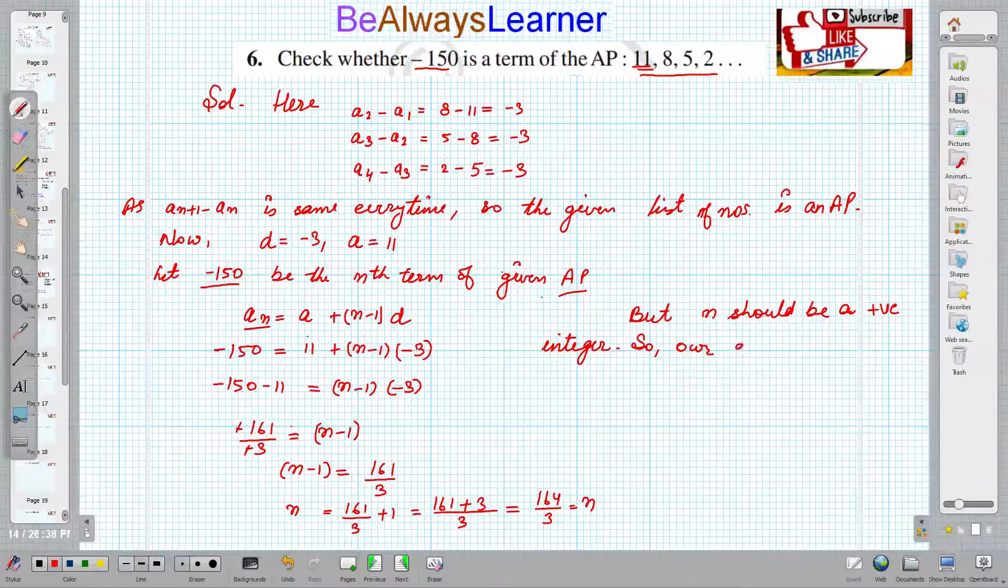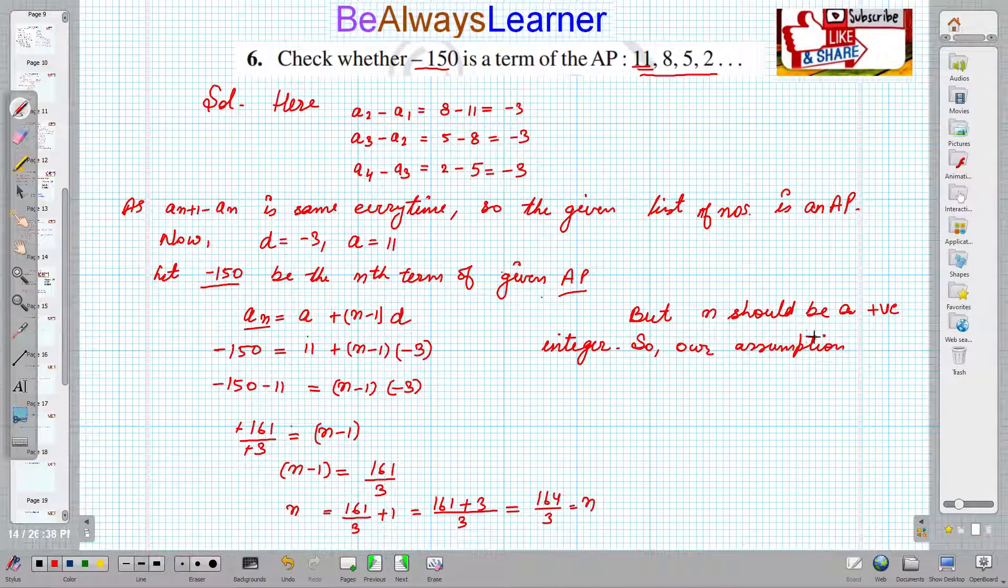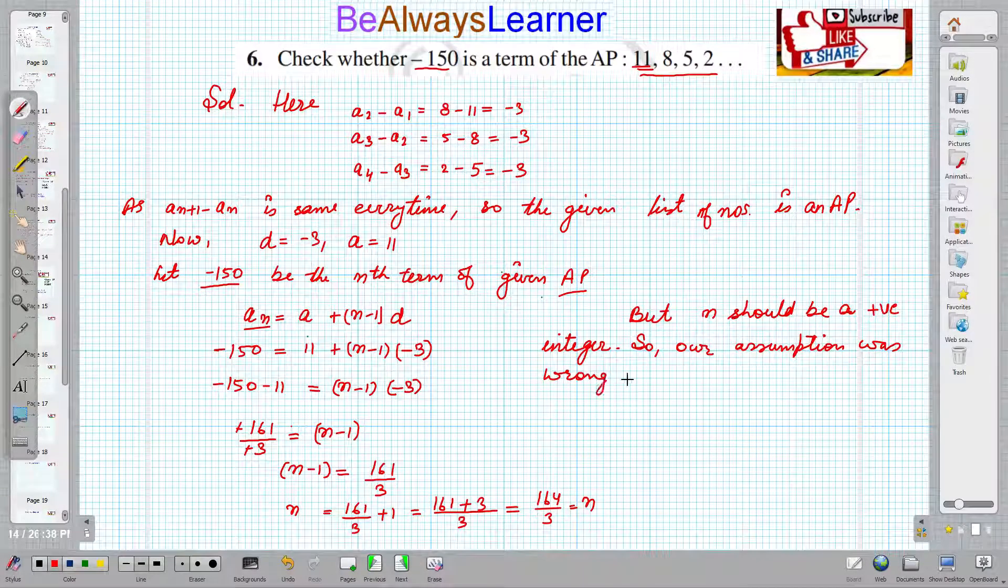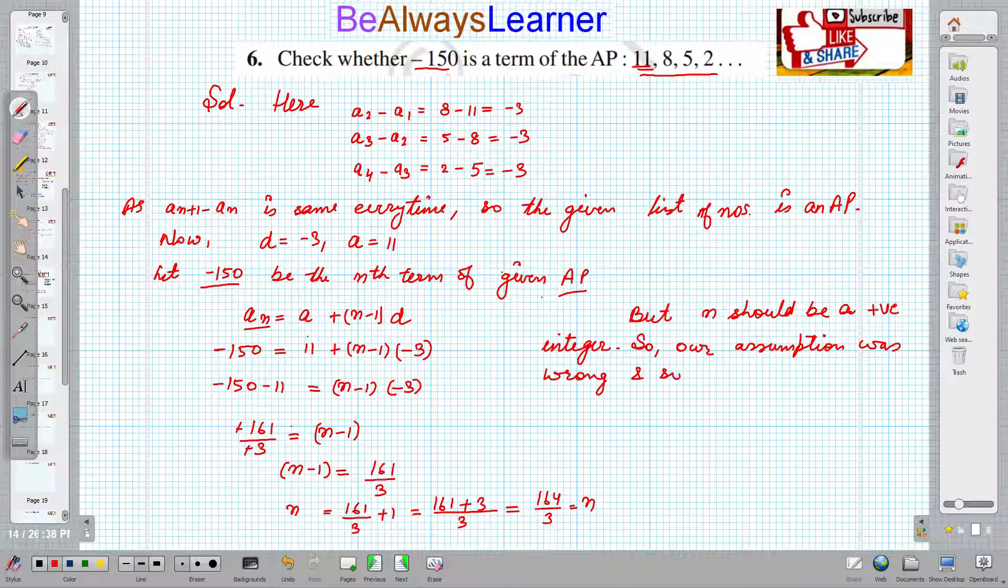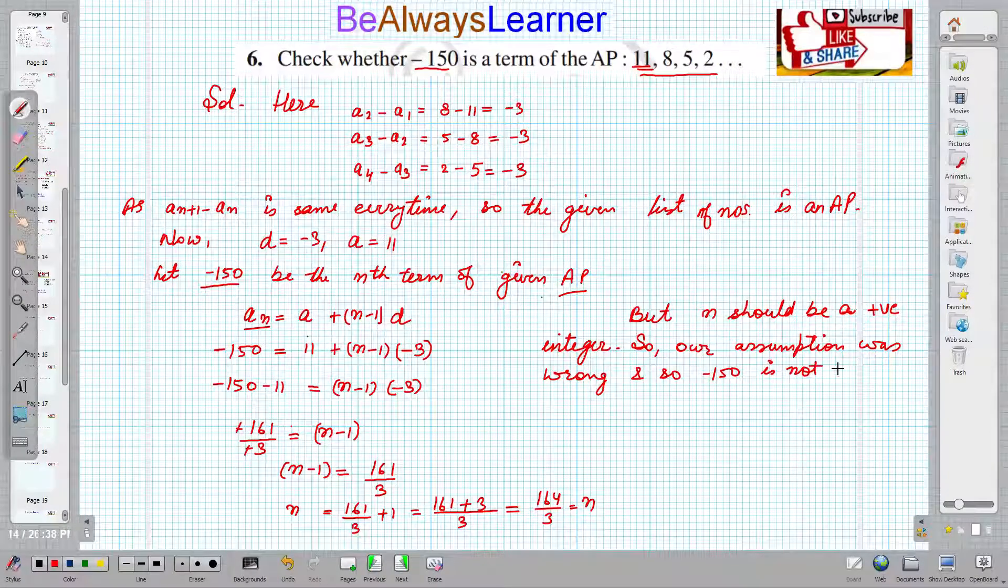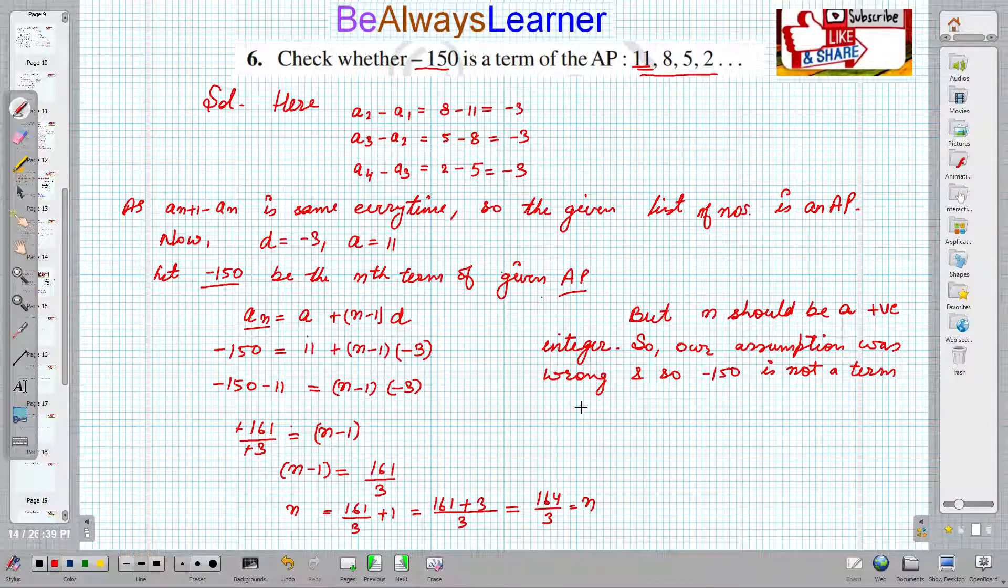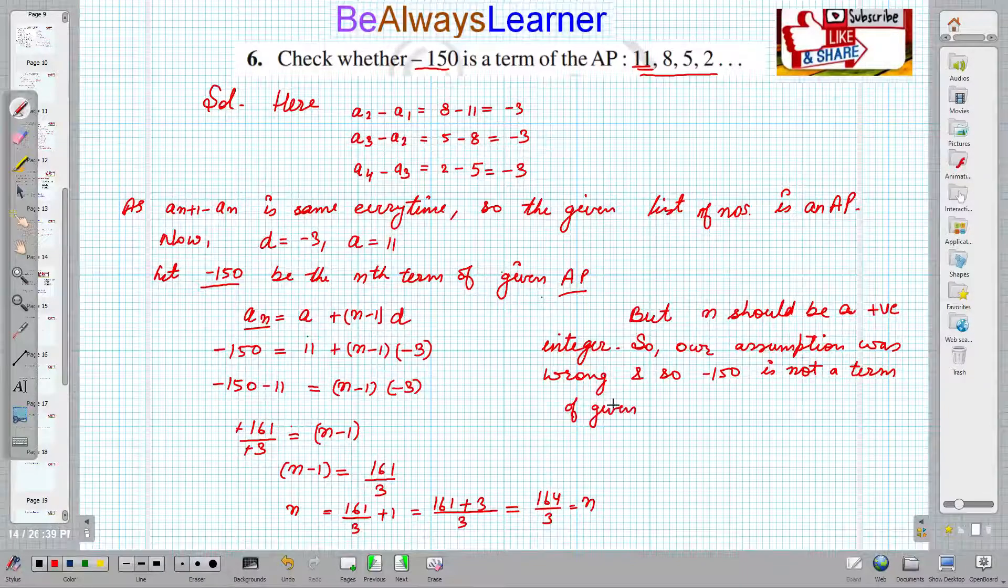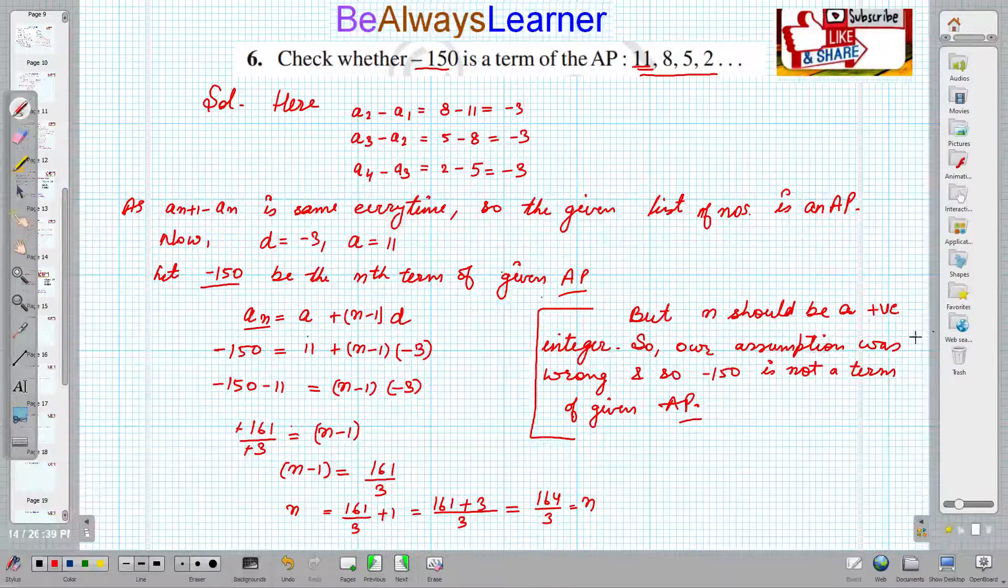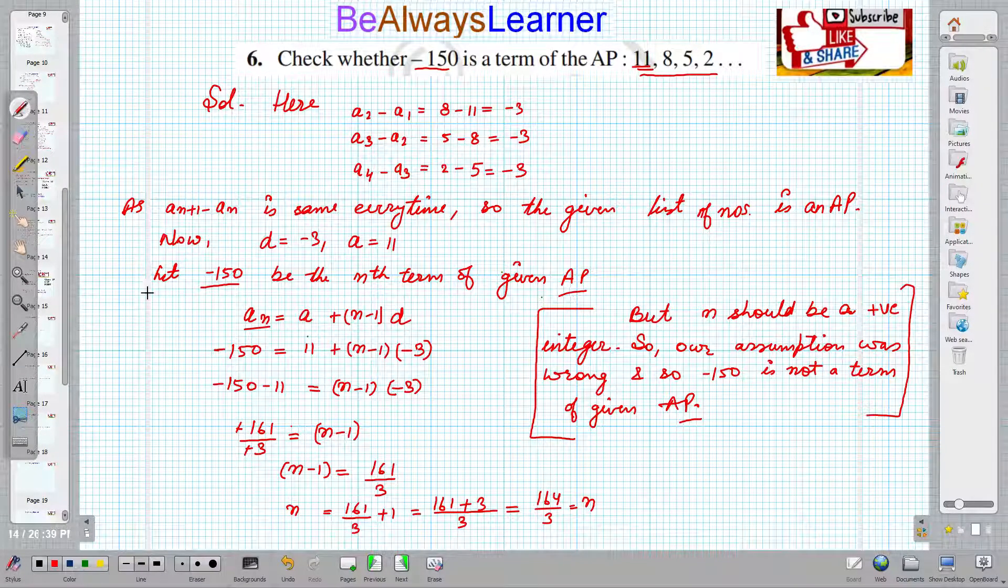Our assumption was wrong. And so we can finally conclude that -150 is not a term of the given AP. So this is the conclusion. This is how we check whether a number exists in the sequence.